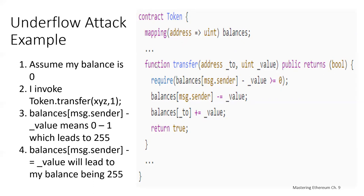Now suppose we do a transfer function and transfer one token to an address — let's call it XYZ — and we pass in one. Our balances for msg.sender minus value: if the balance is zero minus one, that leads to 255. So I'm trying to transfer a token, but I've rolled over and now my balance is 255 even though I didn't have any tokens to transfer. This is one example of something going wrong because inputs and outputs aren't being checked.